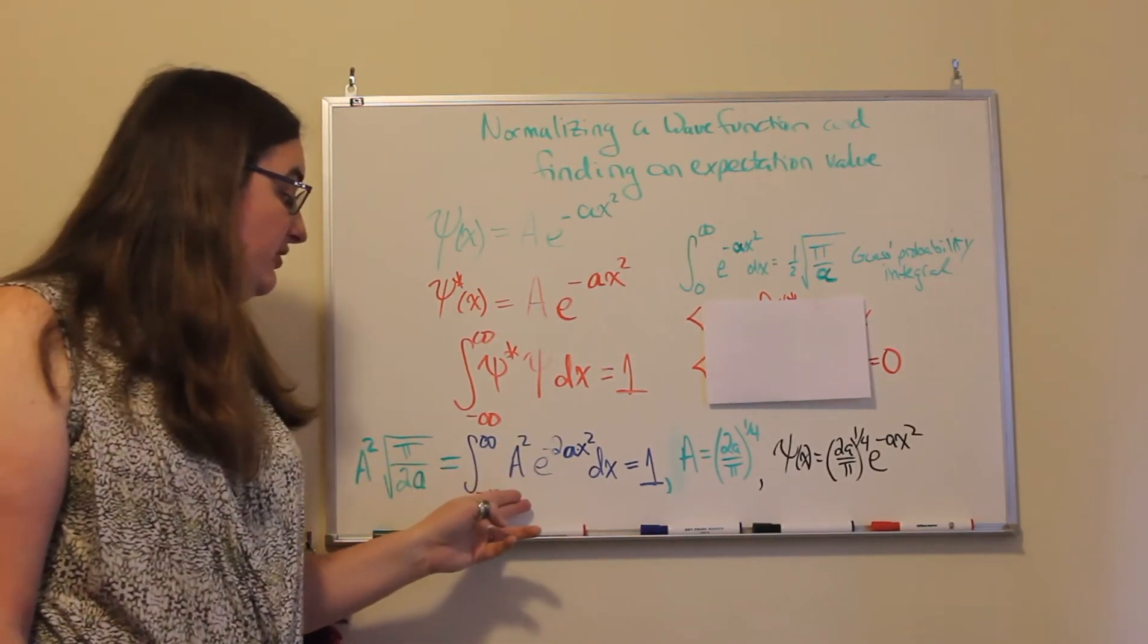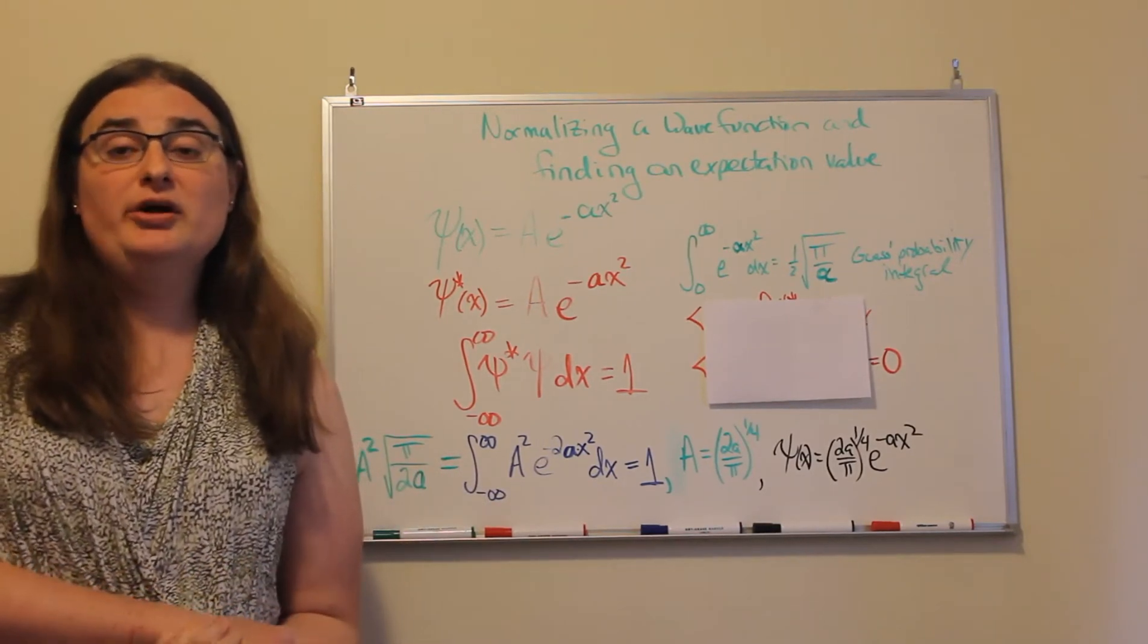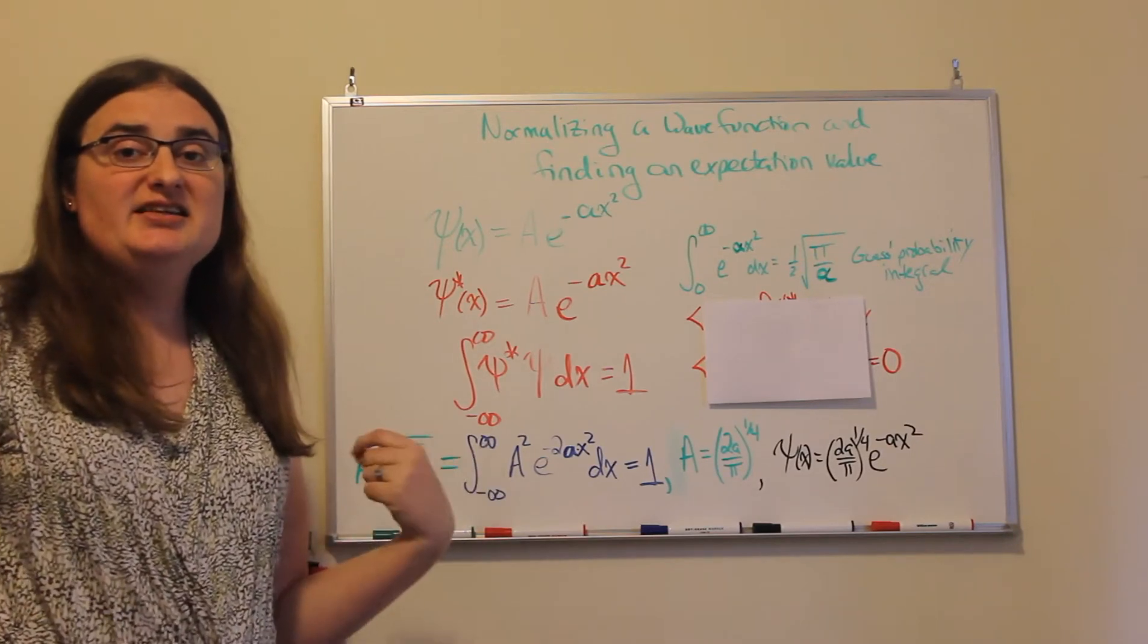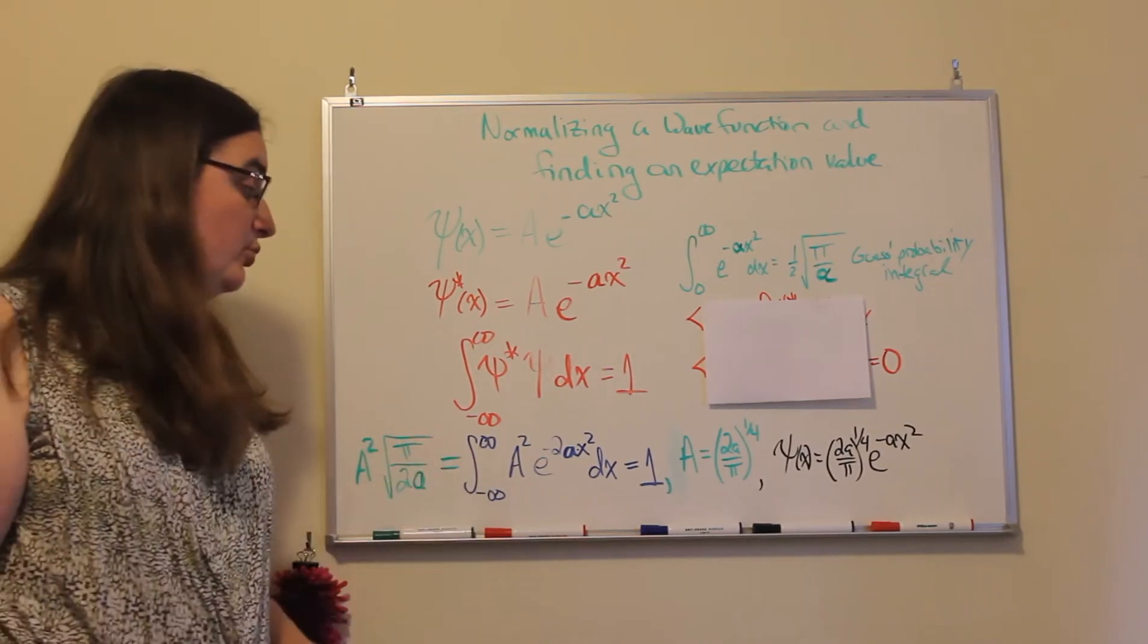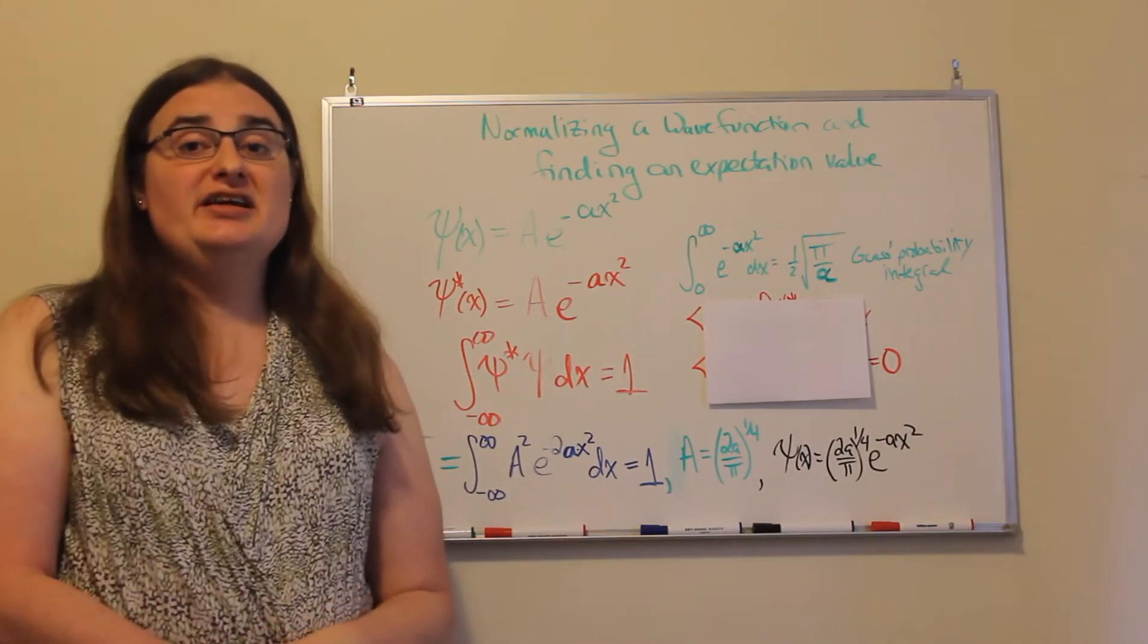Well, that becomes an integral from minus infinity to infinity of a squared, which is a constant which can be brought outside, times e to the minus 2ax squared dx, and that's still set equal to one.